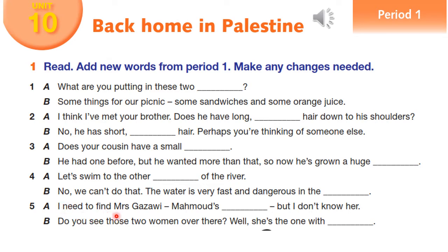Question five: 'I need to find Mrs. Ghazawi — Mahmood's wife — but I don't know her.' 'Do you see those two women over there? Well, she is the one with ___.' Now let's listen together.